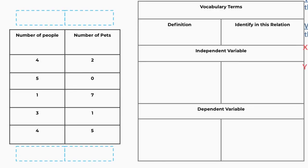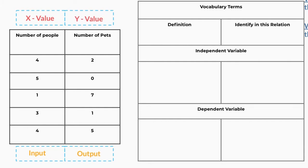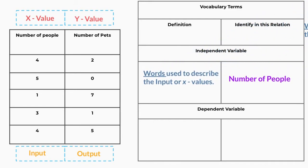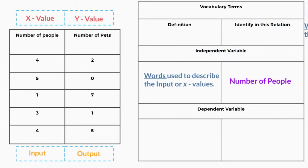We're going to label our vocabulary terms with their definitions and identify them in the relation to the left. We have a table with the number of people and the number of pets. The number of people is going to be our x value or input. The independent variable is the words used to describe the input or x values, so in this case our independent variable is the number of people.